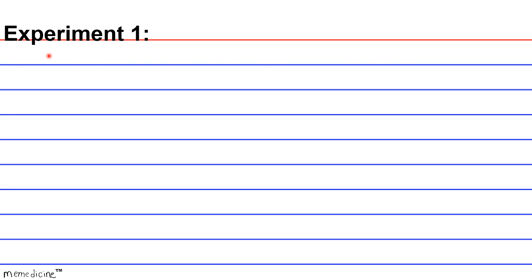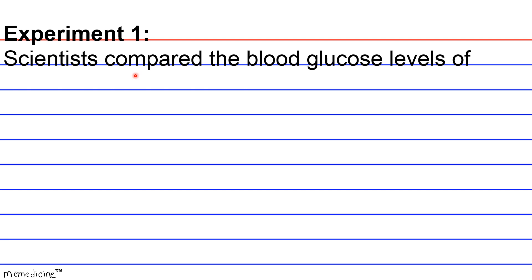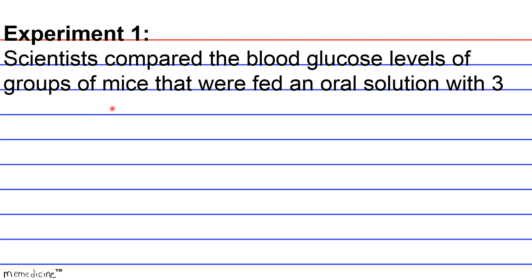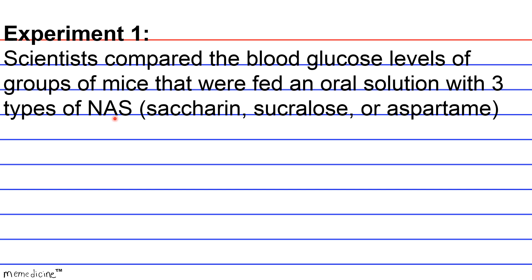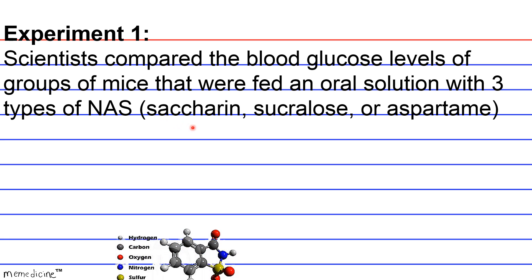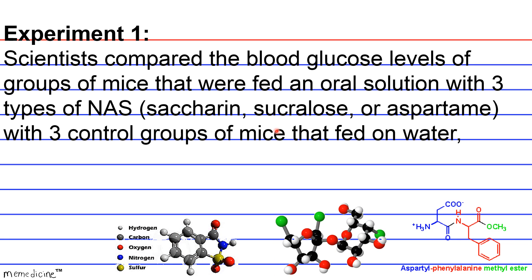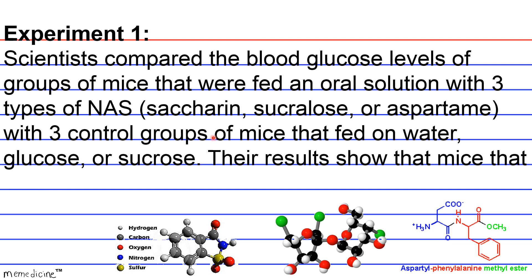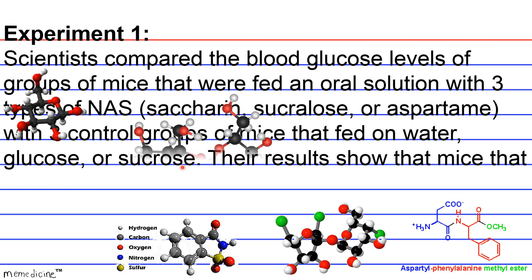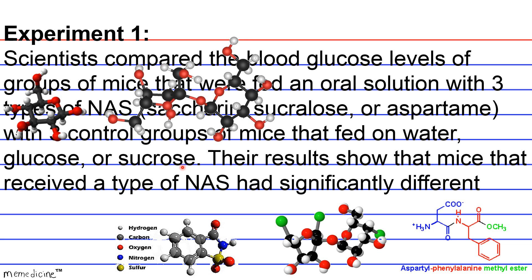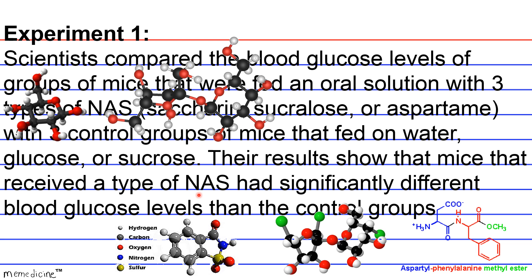Experiment 1. Scientists compared the blood glucose levels of groups of mice fed an oral solution with three types of NAS — saccharin, sucralose, or aspartame — with three control groups of mice fed on water, glucose, or sucrose. The results show that mice that received a type of NAS had significantly different blood glucose levels than the control groups. See Figure 1.